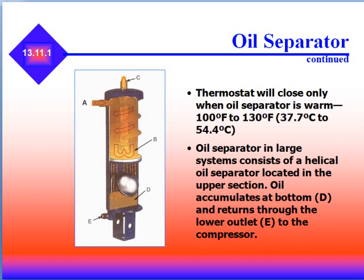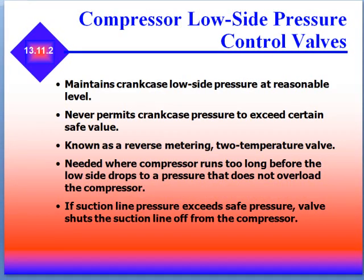The oil separator in large systems consists of a helical oil separator located in the upper portion of the system; oil accumulates at the bottom and returns through the lower outlet to the compressor. Many compressors also have low side pressure control valves that maintain crankcase low side pressure at a reasonable level and never permit the crankcase pressure to exceed certain safe values. It's known as a reverse metering or two temperature valve. It's needed when a compressor runs too long before the low side drops to a pressure that does not overload the compressor.